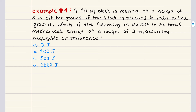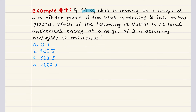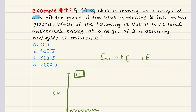Moving on to problem four. Problem four says a 40 kilogram block is resting at a height of five meters off the ground. If the block is released and falls to the ground, which of the following is closest to its total mechanical energy at a height of two meters, assuming negligible air resistance? The total mechanical energy equals the sum of the object's potential energy and kinetic energy. Assuming negligible air resistance, conservation of energy states that the total mechanical energy is constant as it falls.